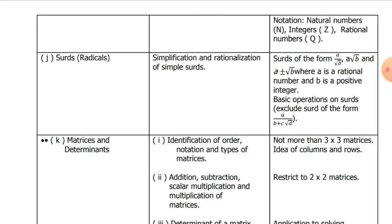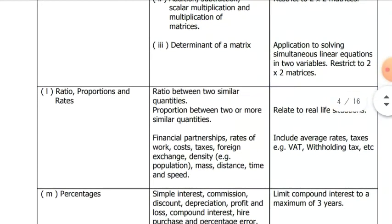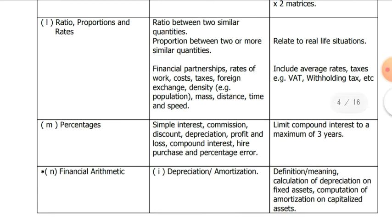After surds, you should do matrix and determinants. After matrix and determinants, you should study ratios, proportions, and rates. After that, you should read percentages. Under percentage, you have simple interest, commission, discount, depreciation, profit and loss, compound interest, hire purchase, and percentage error. Read this very well.